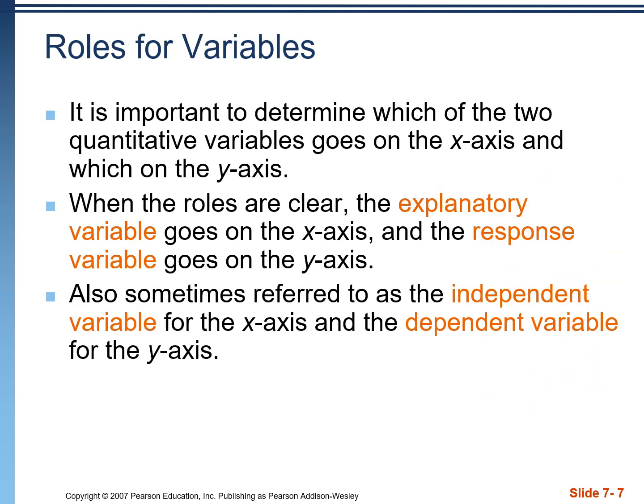Just a bit of terminology: we want to be deliberate when we decide which variable goes on which axis. The x-axis is called the explanatory variable, and the y-axis is called the response variable. They're called that because we like to think of the x-axis explaining the behavior of the y-variable. They're also referred to as the independent variable for the x-axis and the dependent variable for the y-axis.